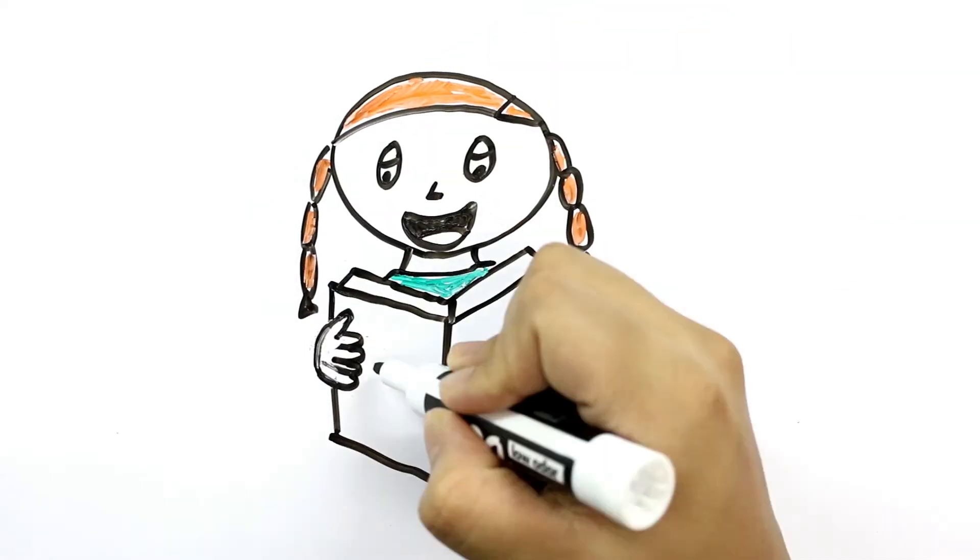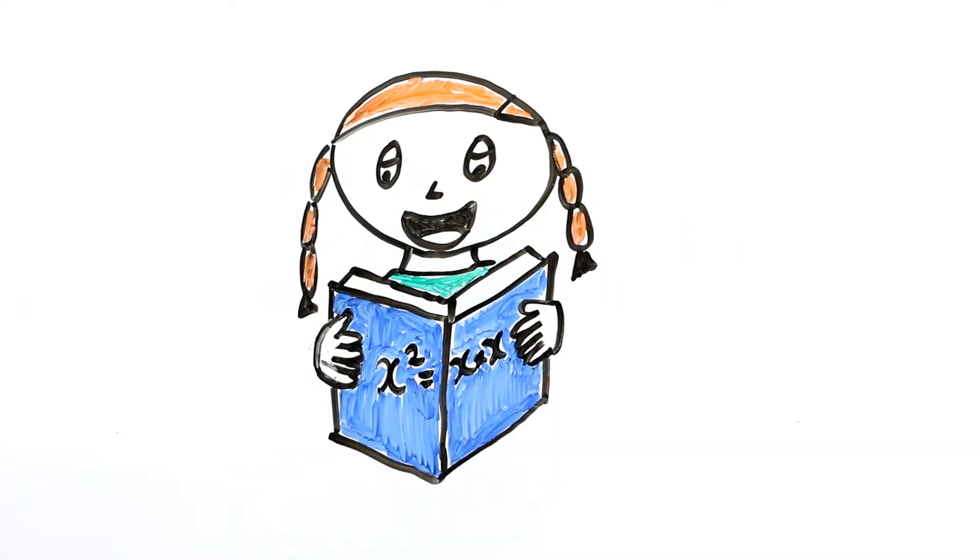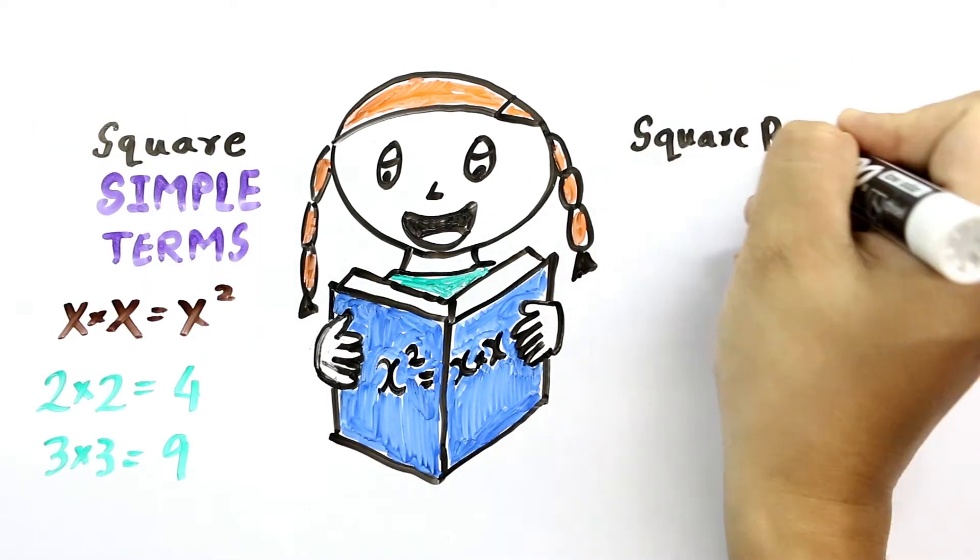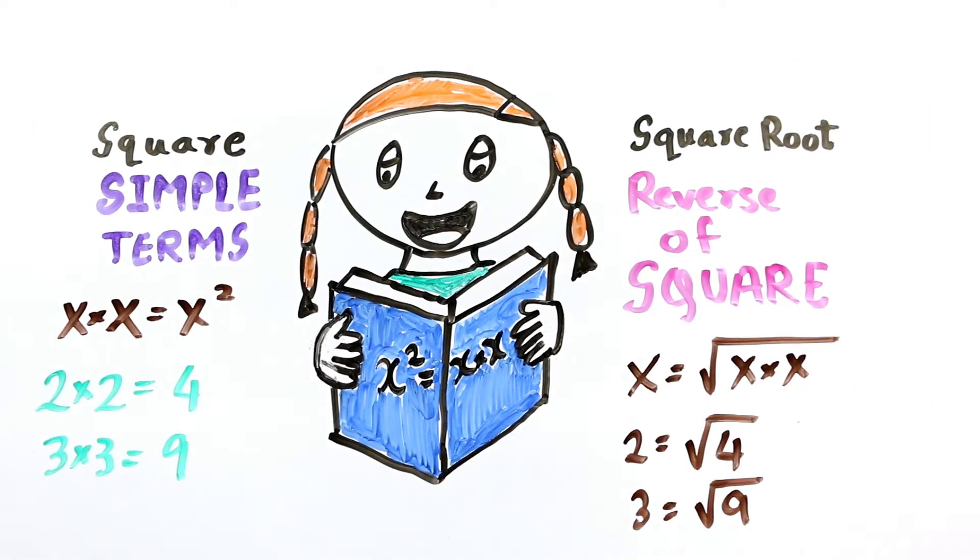In simple terms, when you multiply a number by itself, say x into x, you get x squared. For example, 2 into 2 equals 4, 3 into 3 equals 9, and so on. But what if you want to do the reverse of it, that is when you want to find x back from x squared? That's what we call to find the square root.